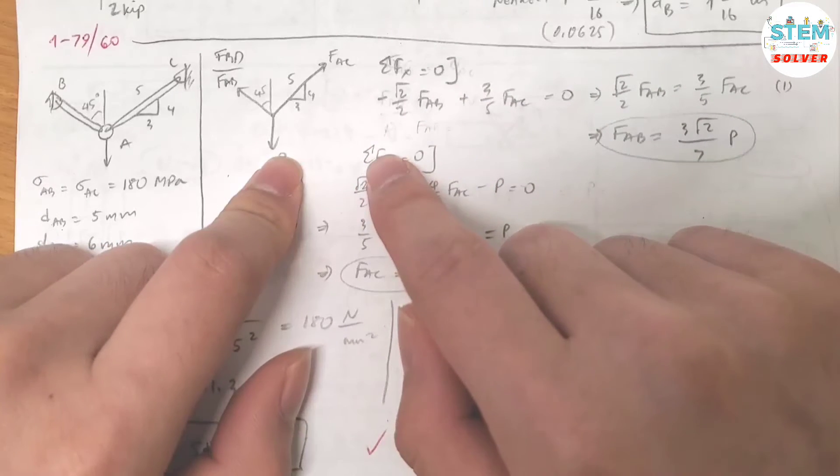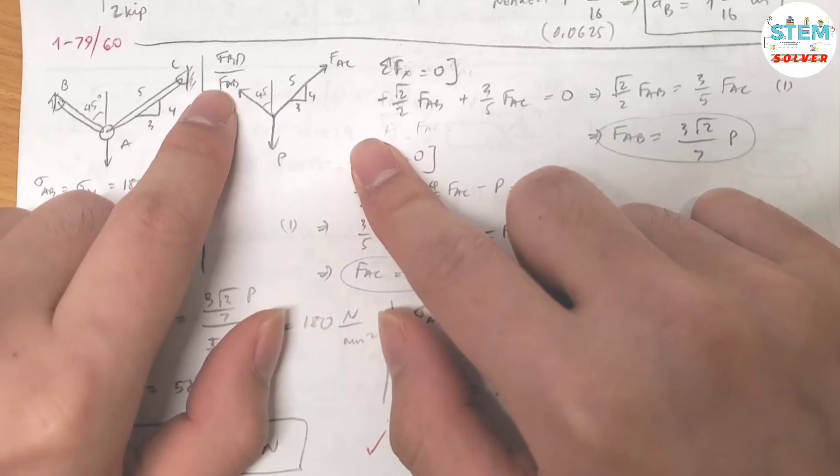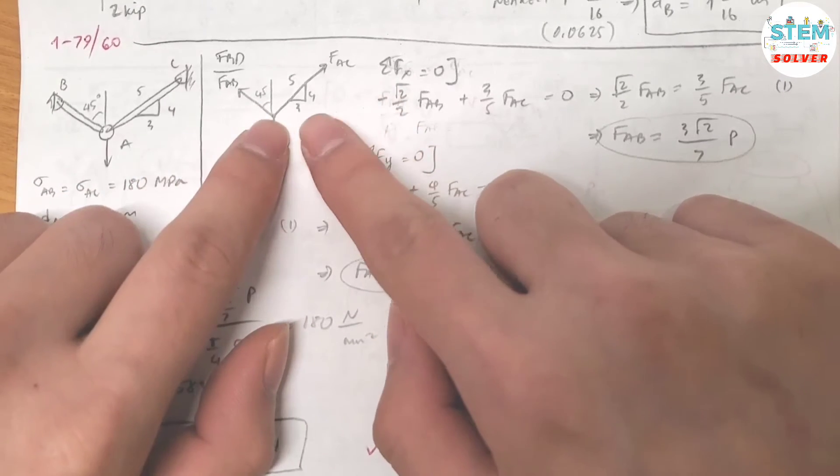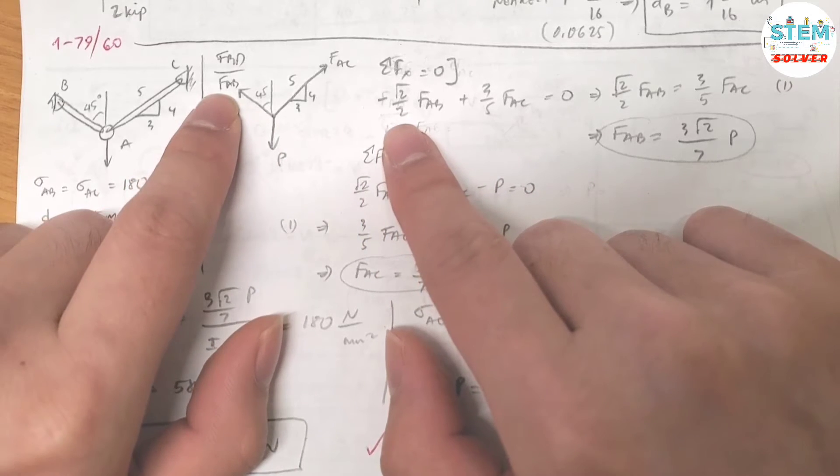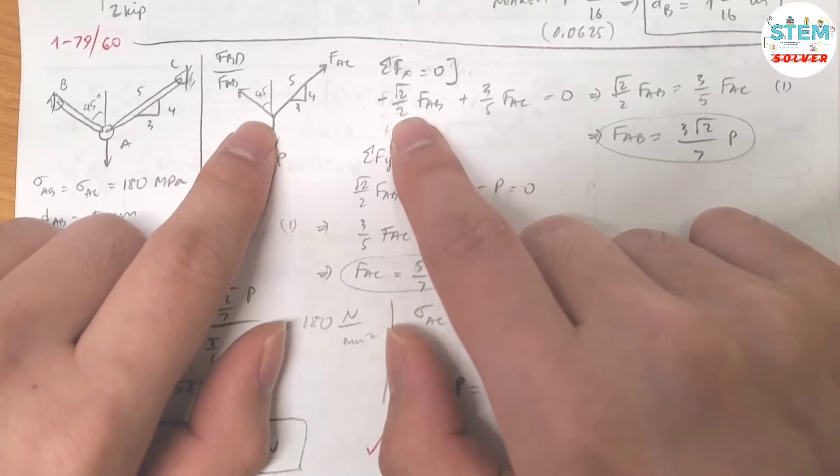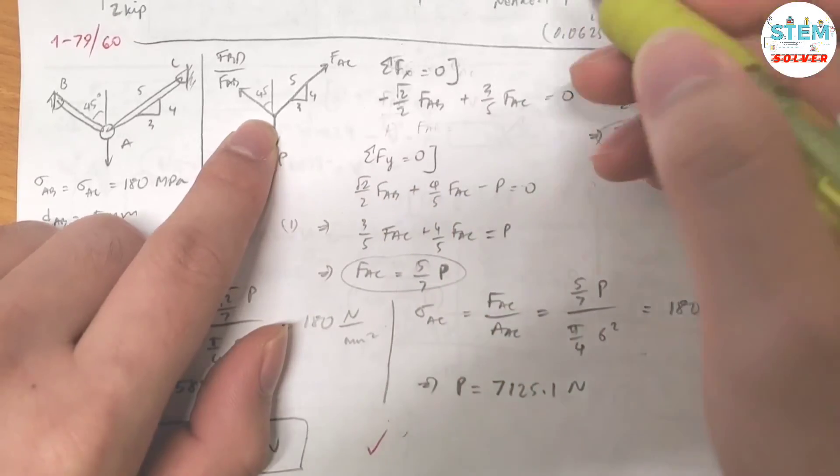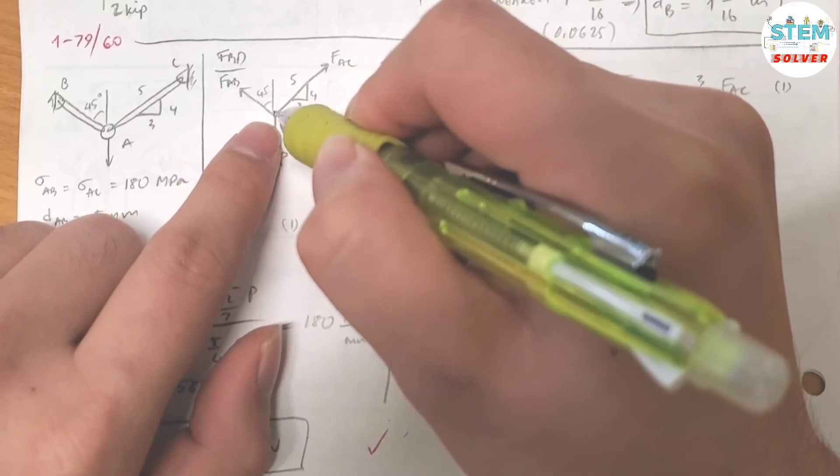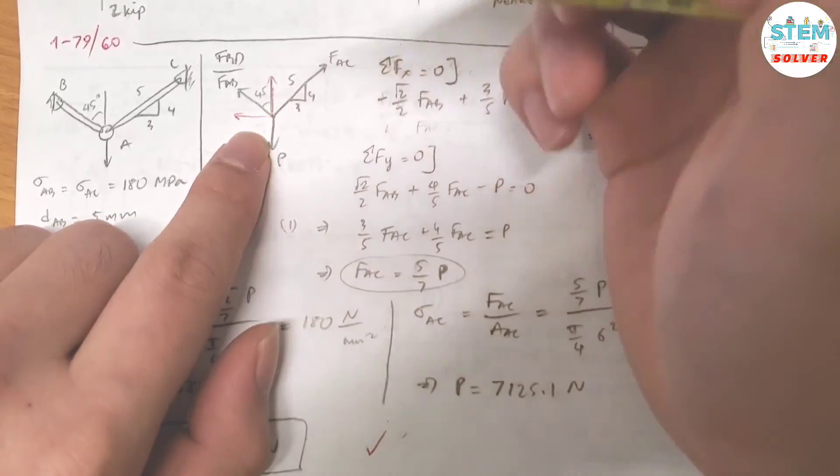This force and this force can be broken down into x-y components. For this force, the x component is negative FAC times sine 45 which is square root of 2 over 2. Let me explain. Break this down into x-y components.